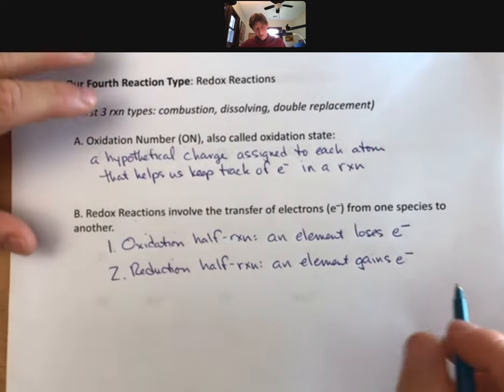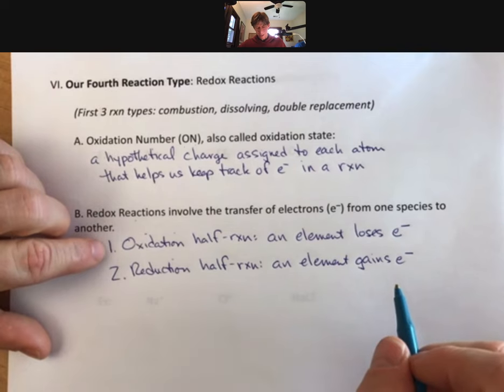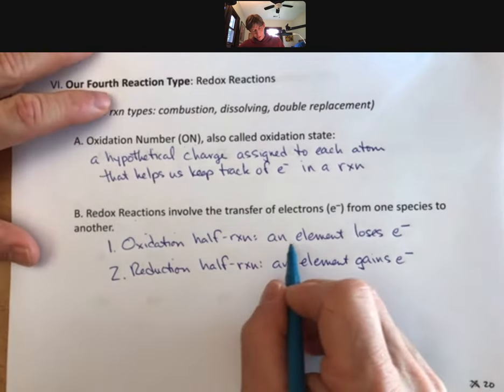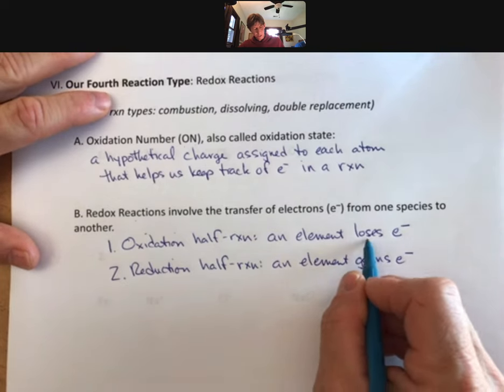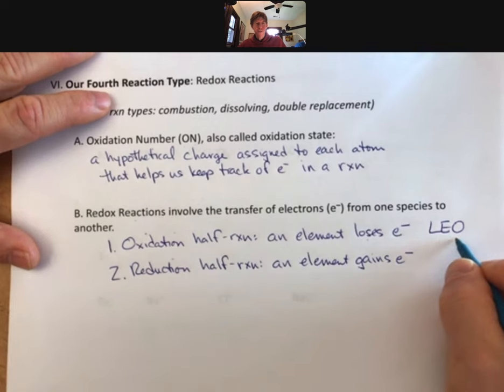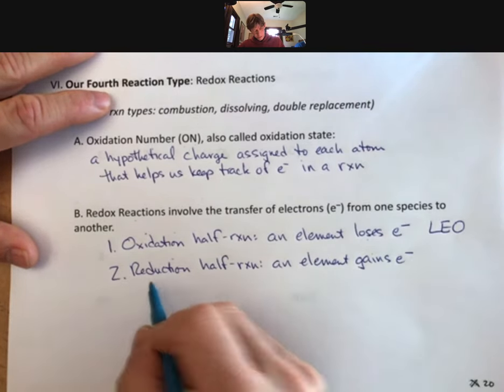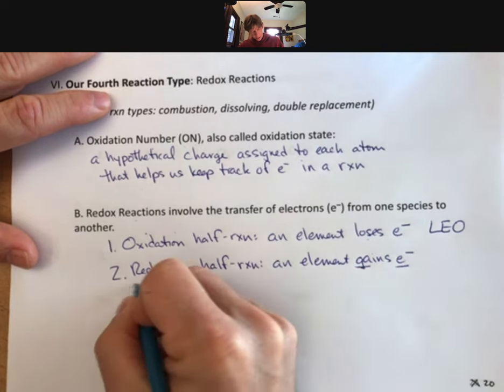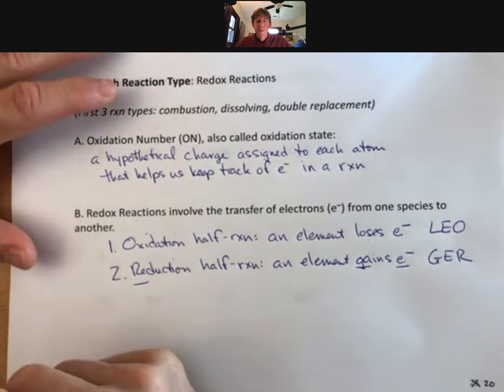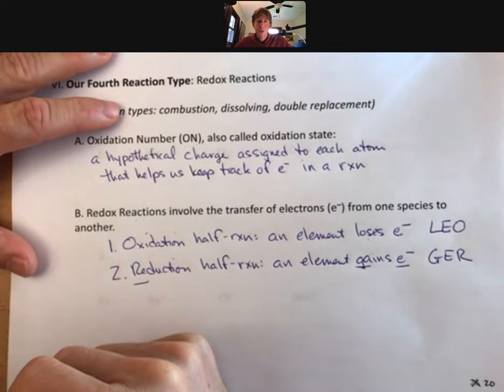And my acronym that helps me remember oxidation and reduction is: an element loses electrons—lose electrons oxidation, LEO; gain electrons reduction, GER. So, Leo the lion says grr.